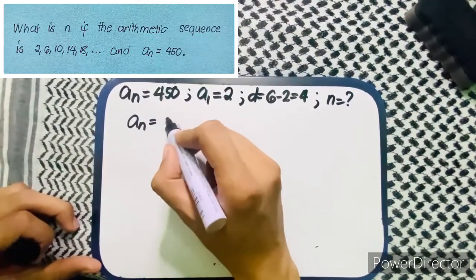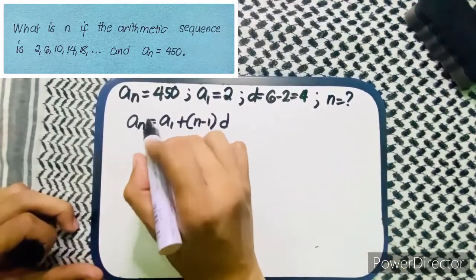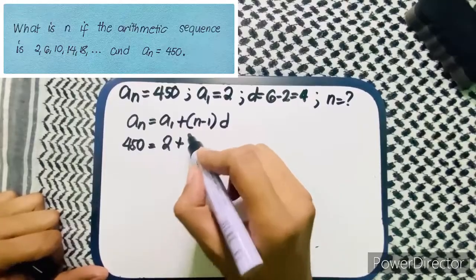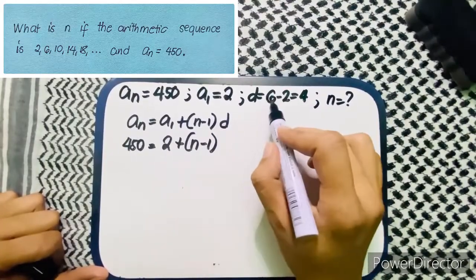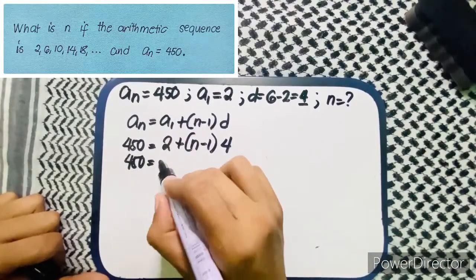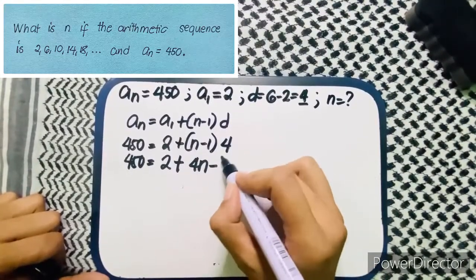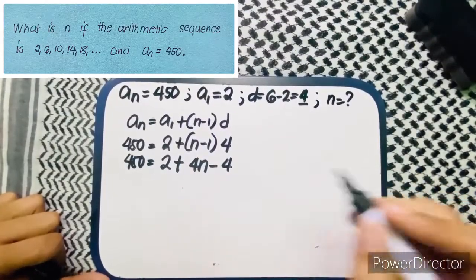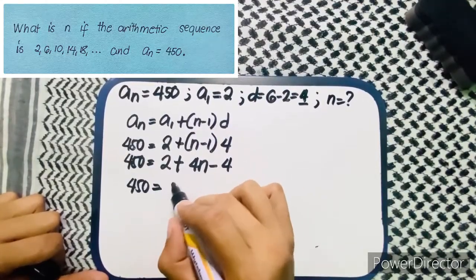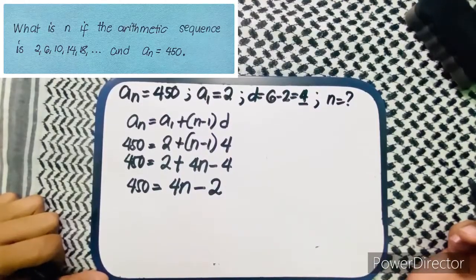Using the formula a sub n equals a sub 1 plus n minus 1 multiplied by d, so 450 equals 2 plus n minus 1 times 4. By the distributive property: 450 equals 4n minus 4 plus 2, which gives 450 equals 4n minus 2.